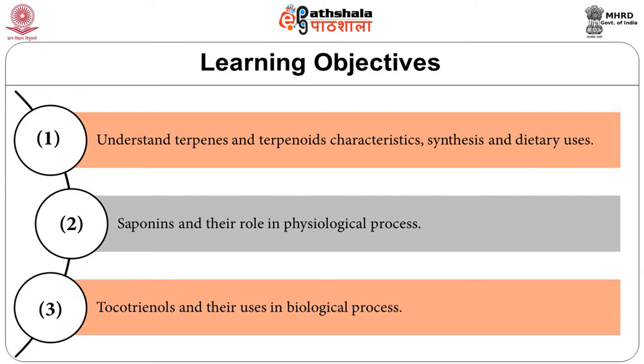These compounds are flavors and fragrances but have been shown in many in vitro, in vivo, and animal model studies to have anti-analgesic and anti-cancer properties. Compounds have also been isolated from many plant foods. The objectives of this module: understand terpenes and terpenoids characteristics, synthesis and dietary uses, saponins and their role in physiological processes, and tocotrienols and their uses in biological processes.